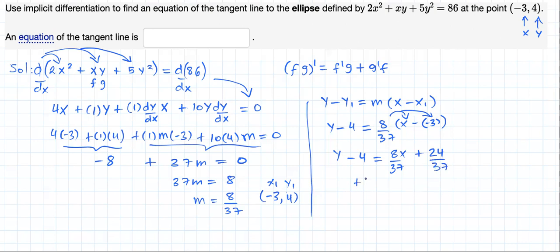Finally, to get this written in slope-intercept form, adding 4 to both sides gives us y = 8/37 times x plus 24/37 plus 4.